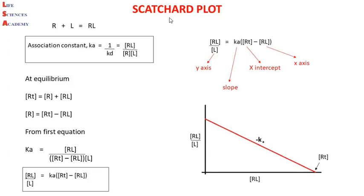Michaelis and Menten derived an equation from which we can calculate the Km value, that is the binding affinity of an enzyme to its substrate. Similarly, Rosenthal-Scatchard derived an equation from which we can determine the binding affinity of a receptor for its ligand. The receptor also acts as an enzyme and gets saturated upon increase in ligand concentration, just like the enzyme gets saturated with increase in substrate concentration.